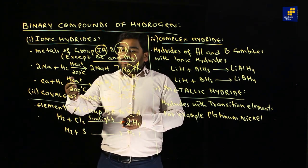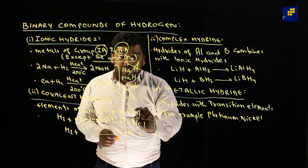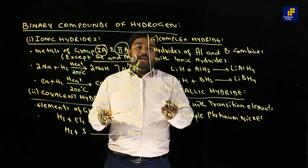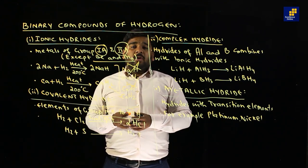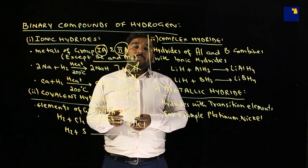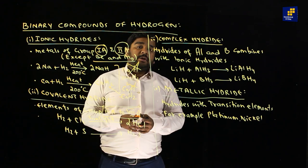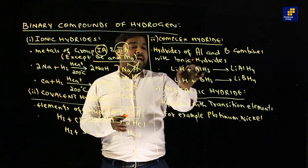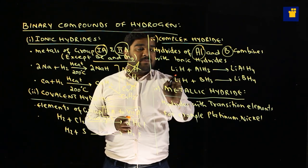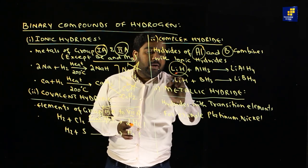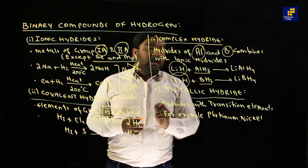The second type is covalent hydride, formed through covalent bonding. These are formed by elements in Groups 3 through 7. Group 8A forms no hydride bond. The exceptions are aluminium and boron, which do not form stable covalent hydrides; instead they form complex hydrides by combining with ionic hydrides.